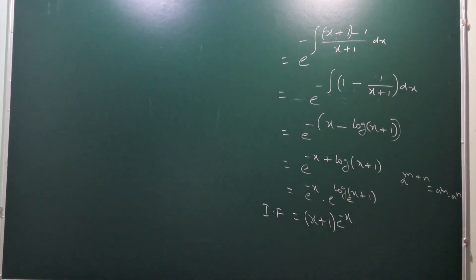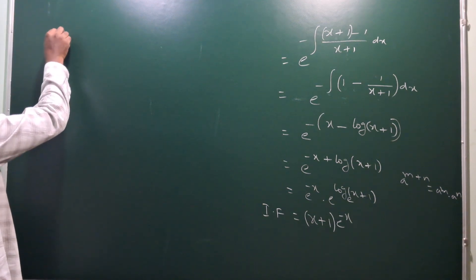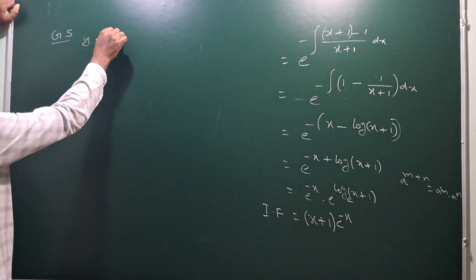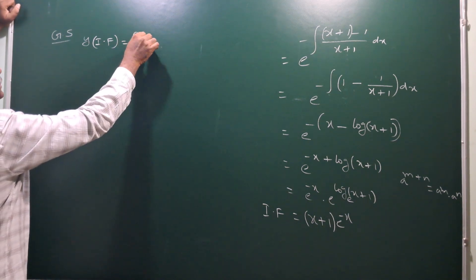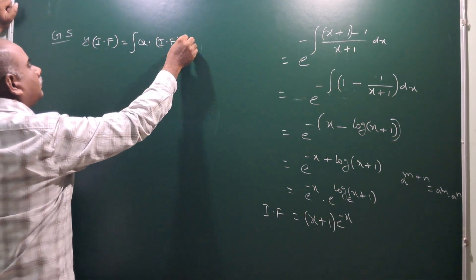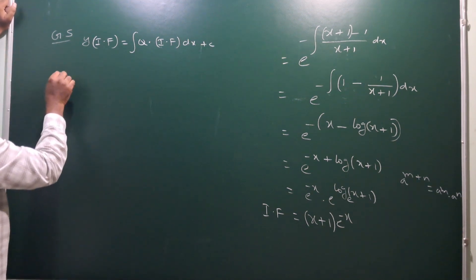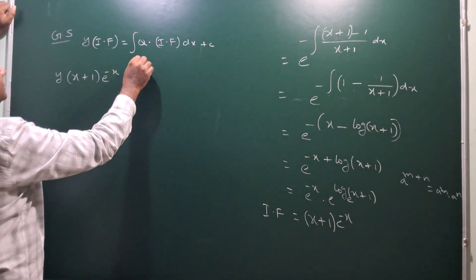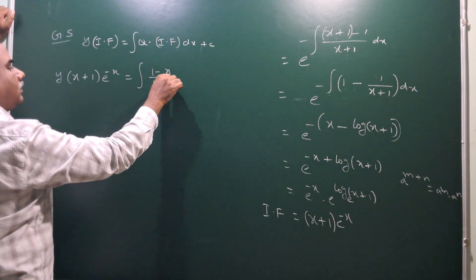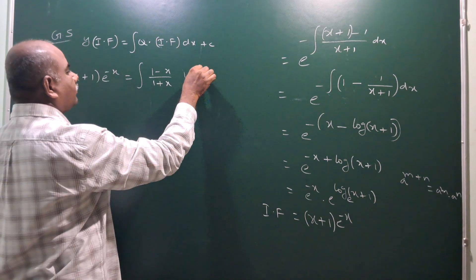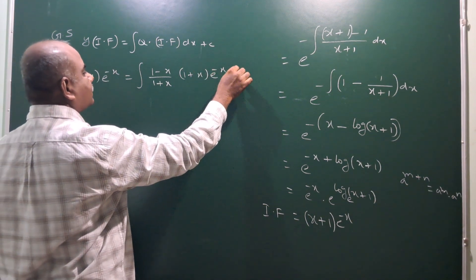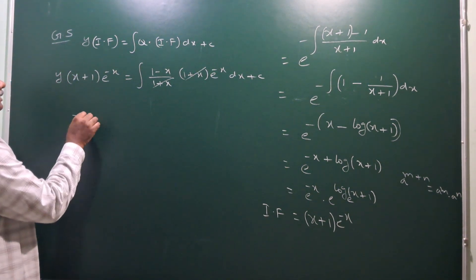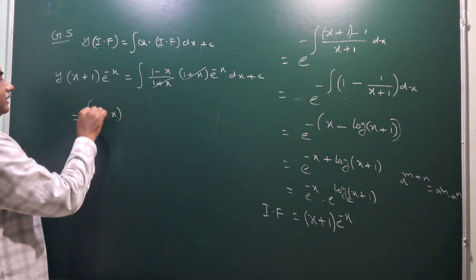Now write the general solution. The general solution for dy by dx form is y into IF equals integral of Q into IF dx plus c. So y into (x plus 1) e to the power minus x equals integral of [1 minus x by (1 plus x)] into (1 plus x) e to the power minus x dx plus c. The (1 plus x) terms cancel, leaving integral of (1 minus x) e to the power minus x dx.